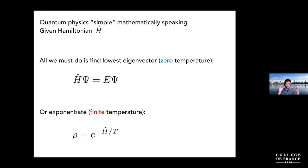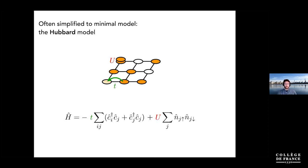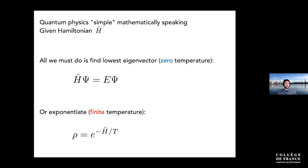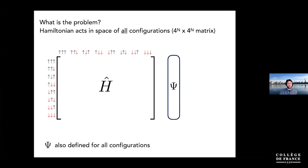Now we'll go in a mathematical direction to talk about many-body quantum physics. From a high level, this all looks simple: you have a Hamiltonian, it's a sum of small matrices. If we want to study quantum systems at zero temperature, we just find an eigenvector of H. At finite temperature, we exponentiate H with a factor including the temperature to get the density matrix rho, and then trace with operators to compute anything we want.